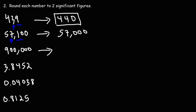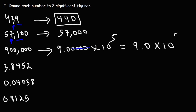What about 900,000? How can we round that to two significant figures? It's good to convert it into scientific notation. This will be 9.000000 times 10 to the 5. 10 to the 5 is 100,000, times 9 gives us 900,000. We only want two significant figures, so we get rid of the four zeros, leaving our answer as 9.0 times 10 to the 5.